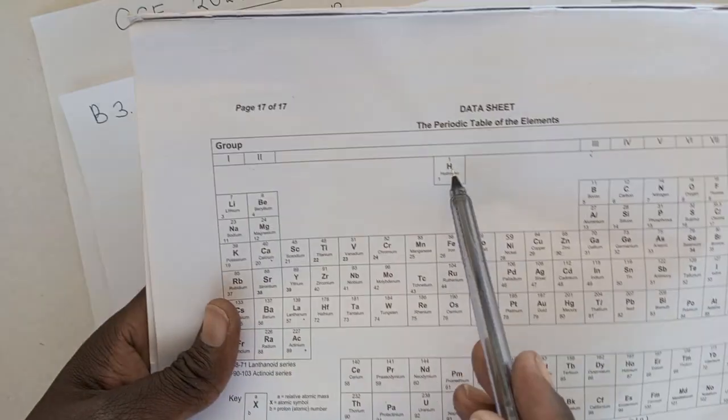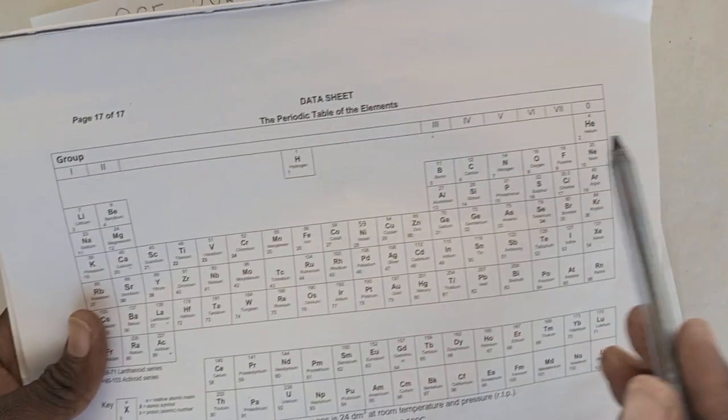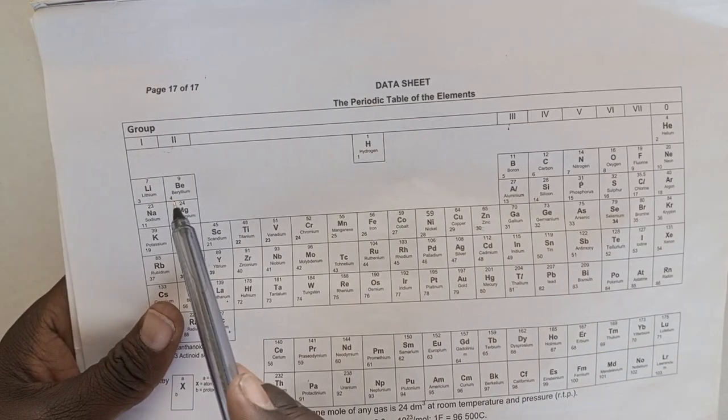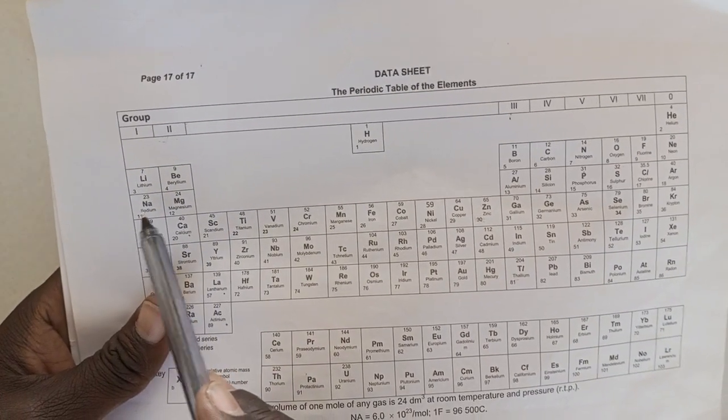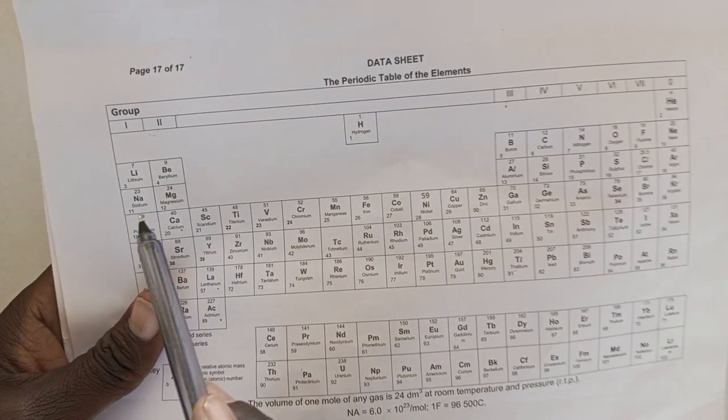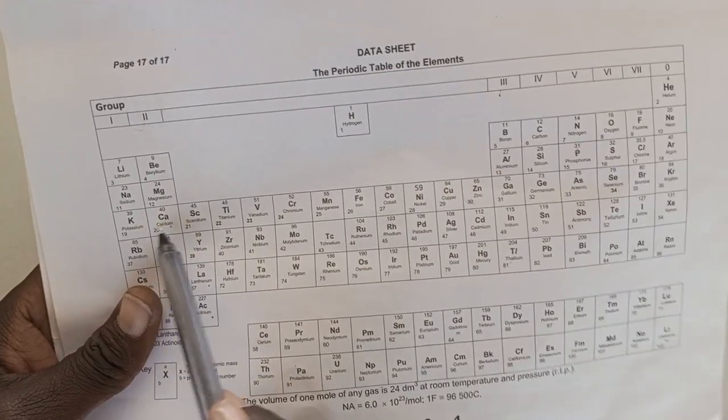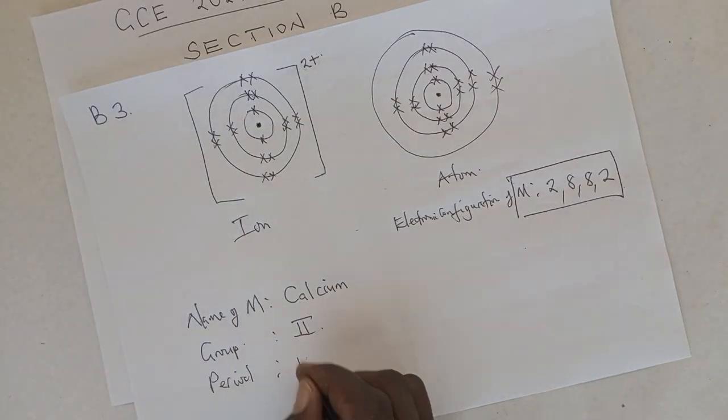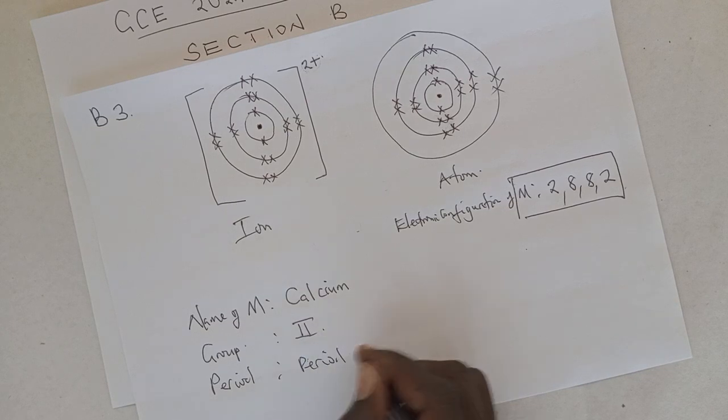Calcium. Here is calcium. So, the first period is where hydrogen and helium are found. The second period, where lithium, beryllium is. The third period, where sodium and magnesium are. And the fourth period is where potassium and calcium are. So, remember that the number of shells correspond to the period in which that element is found. So, the period is period 4.